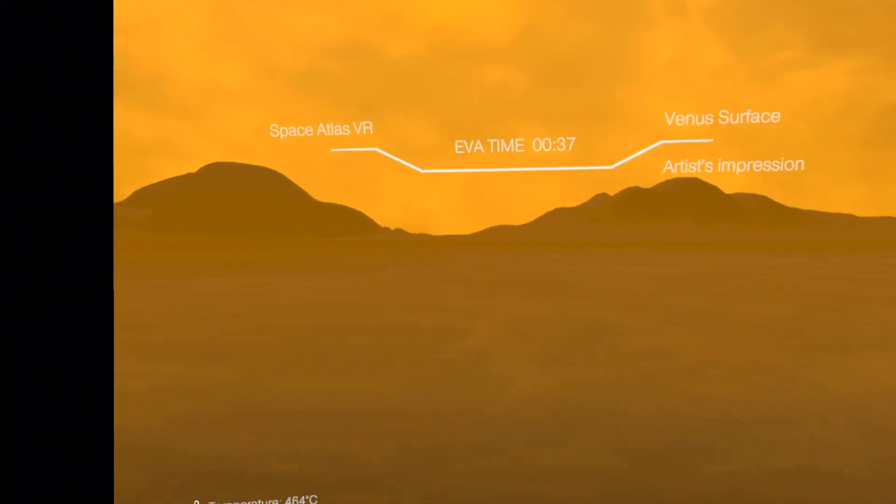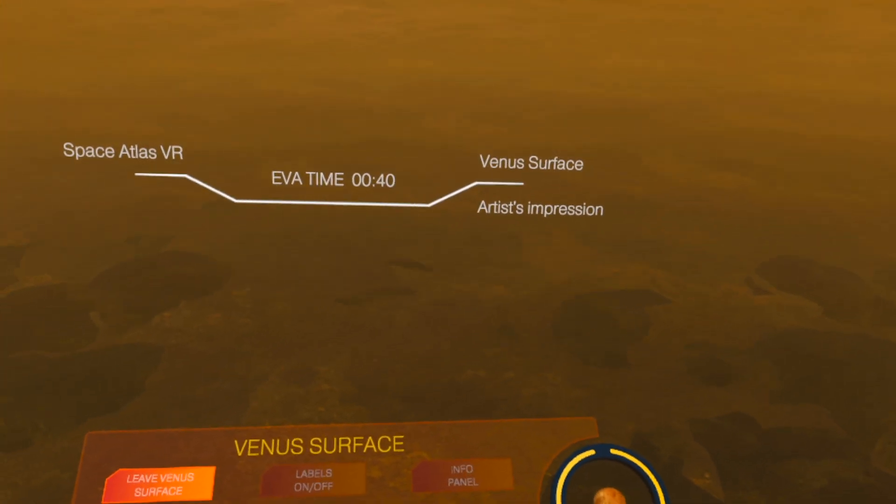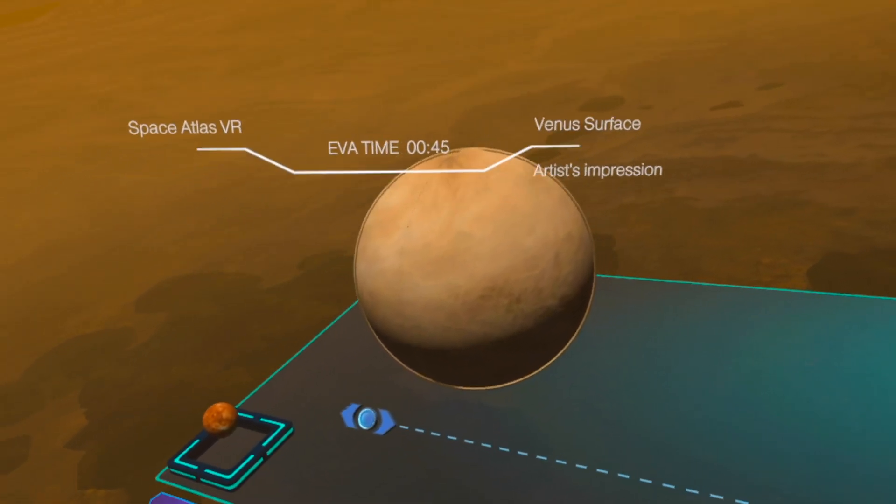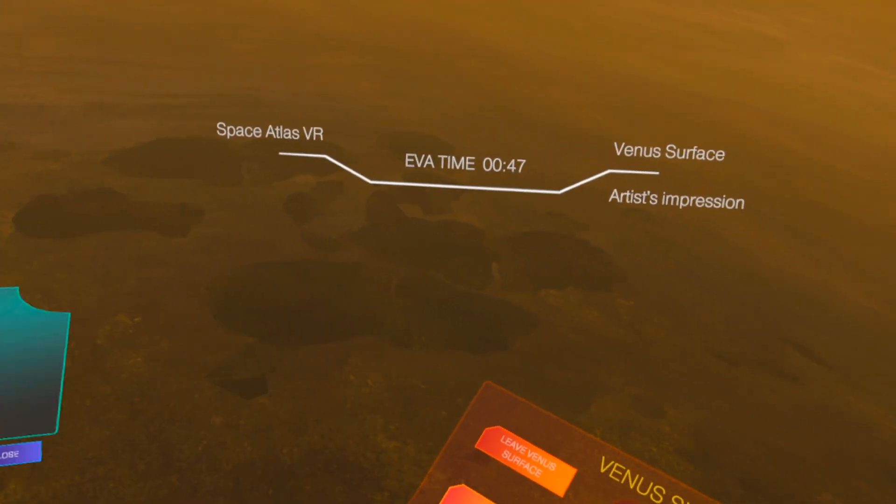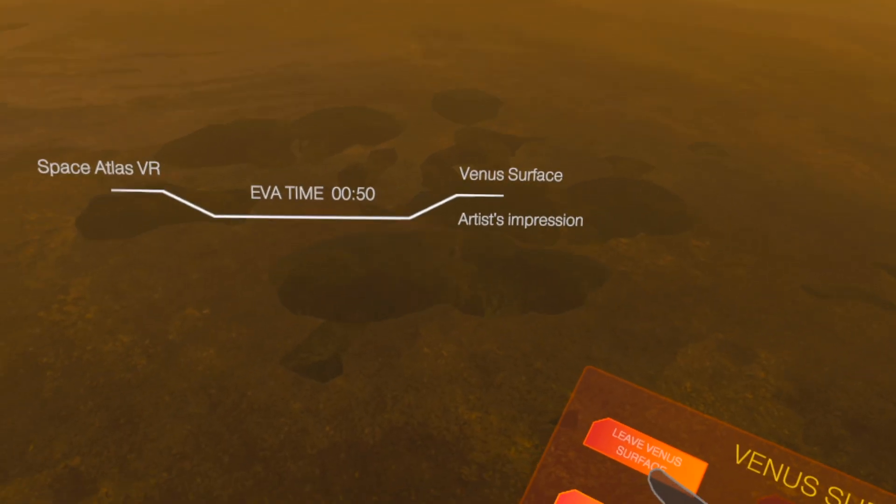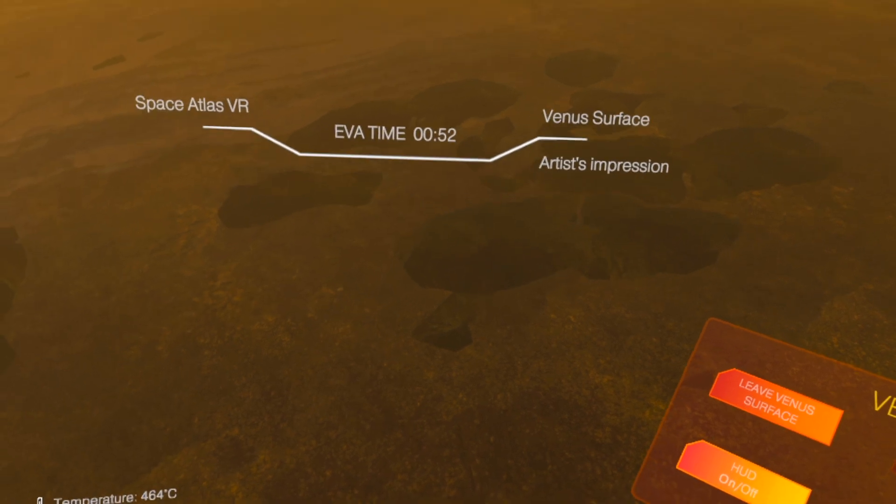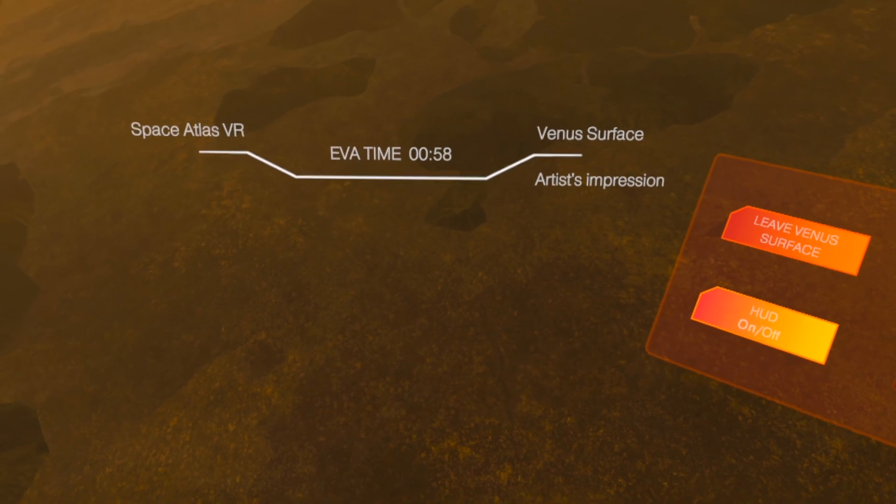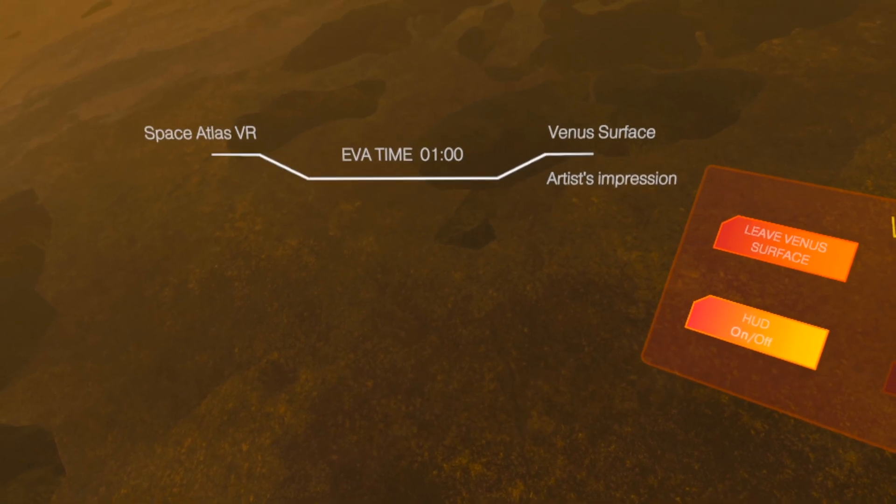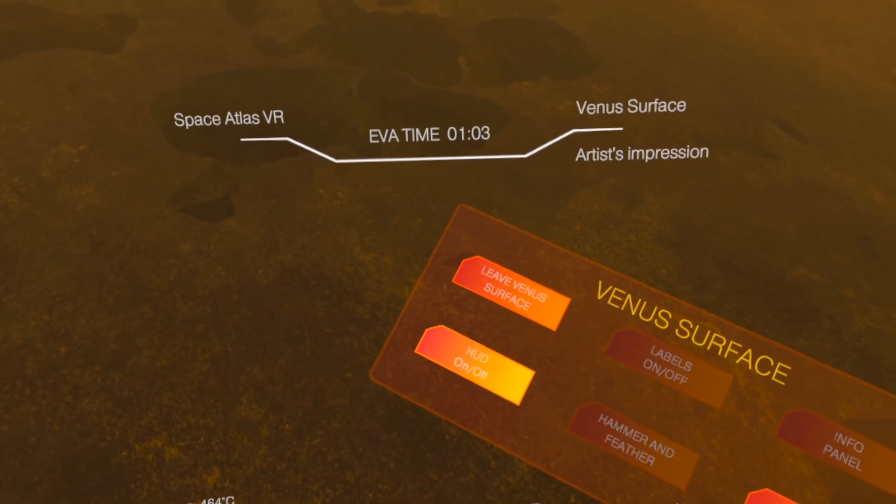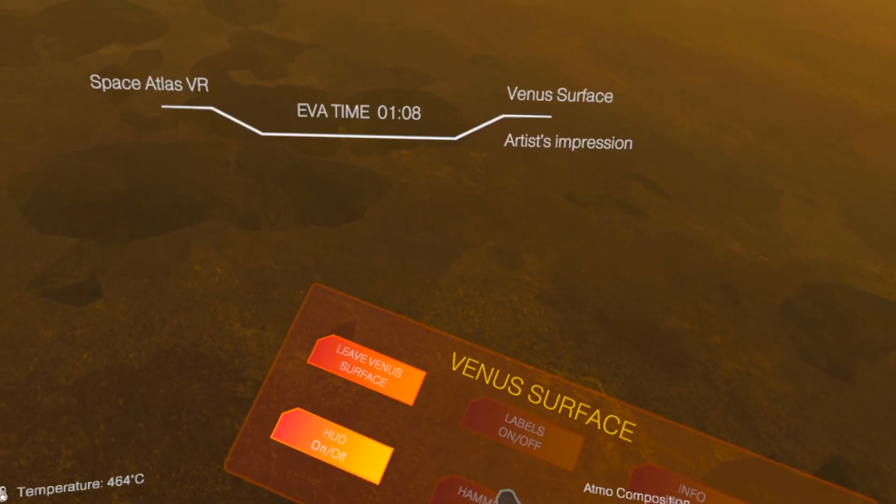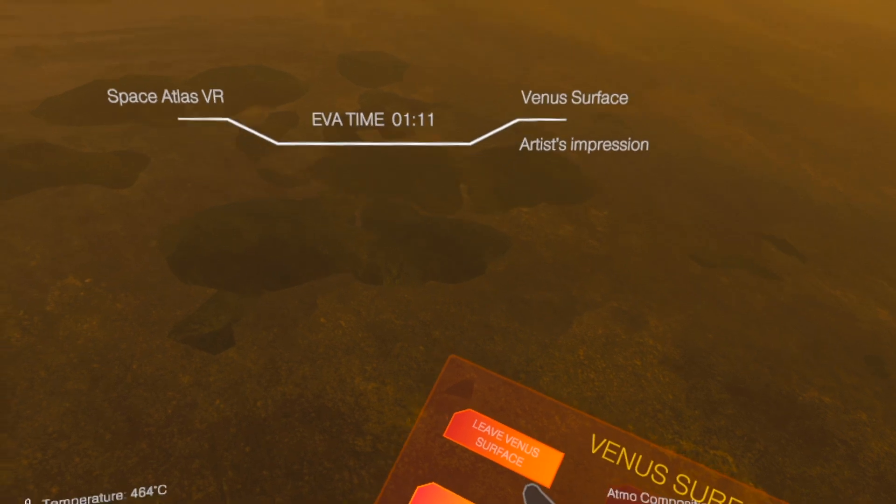We are on the surface of Venus and it's a thick mist and it's very hazy, so no life possible on this planet. The temperature is 464 degrees Celsius. The pressure is here 90 atmospheres. The gravity is about 91% and this is carbon dioxide and some nitrogen. Let's leave this hellhole.